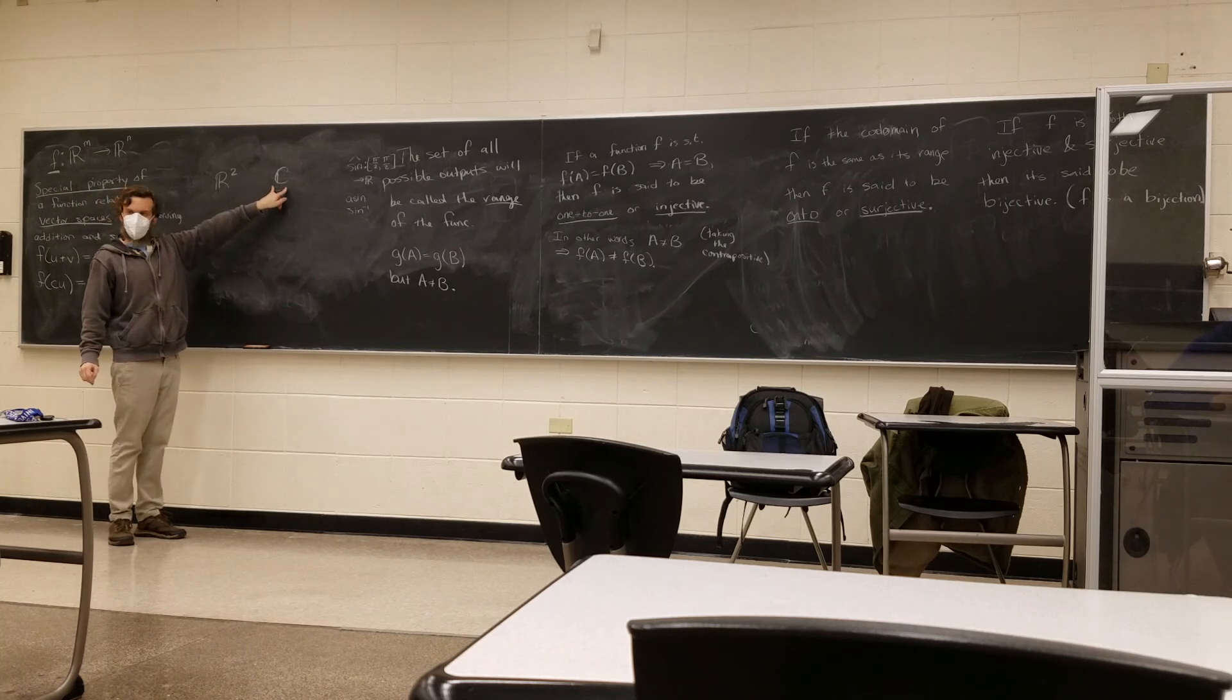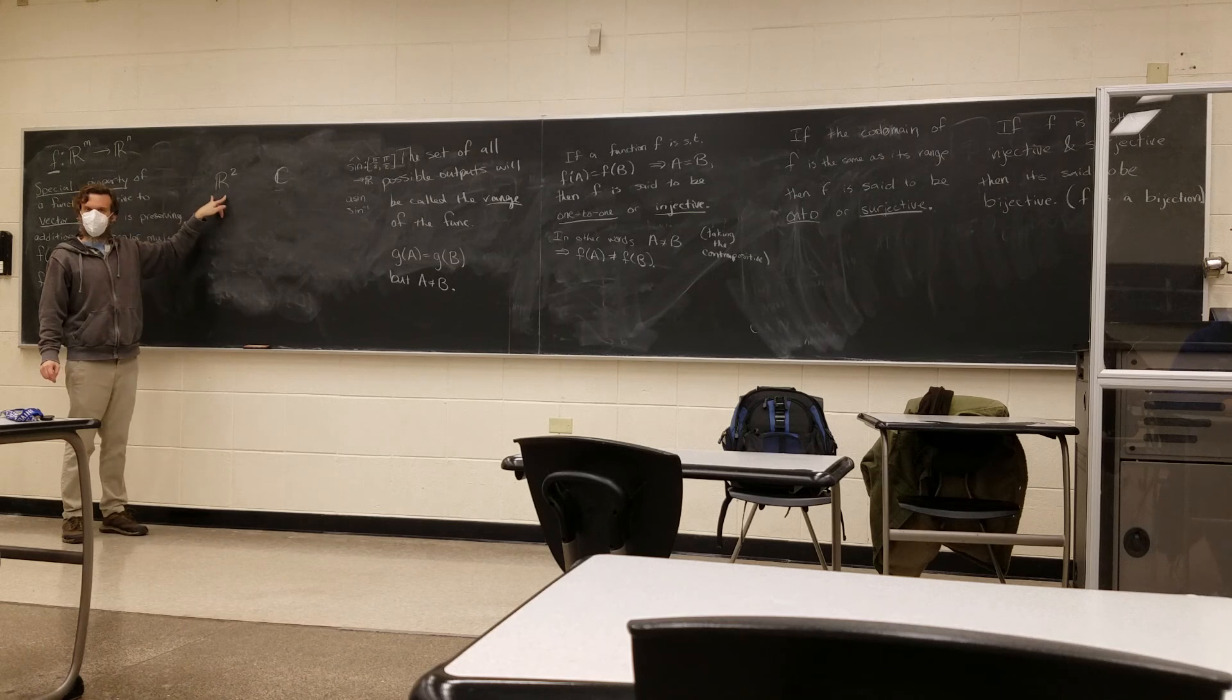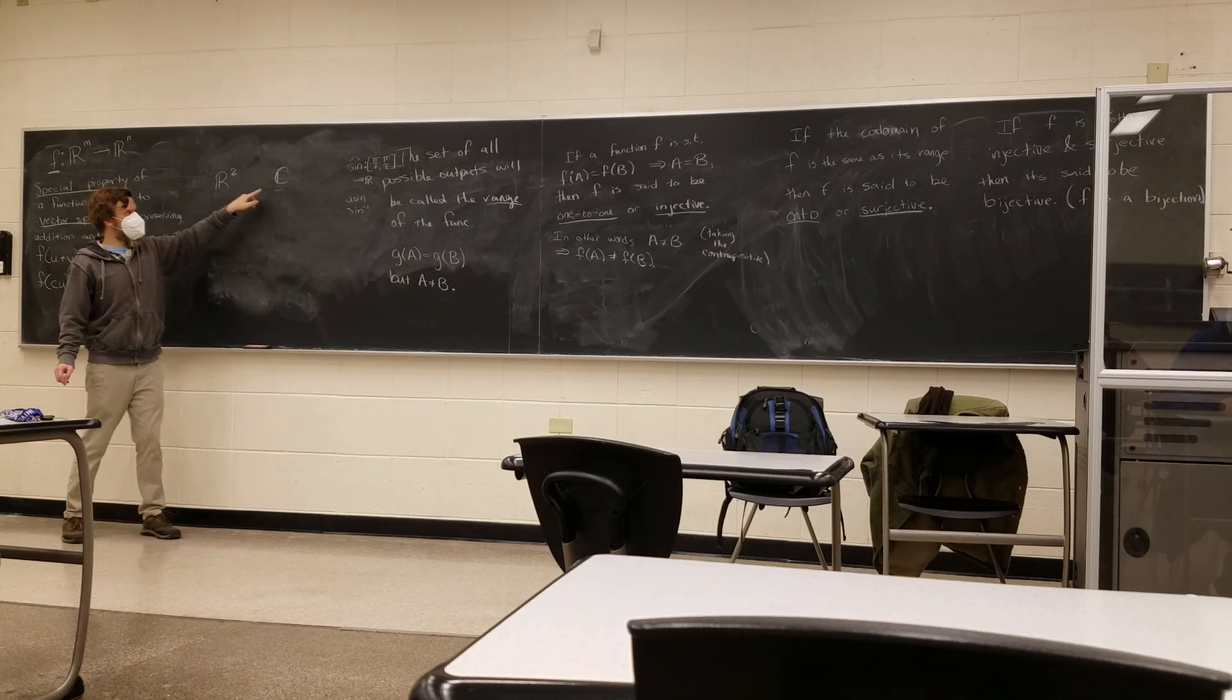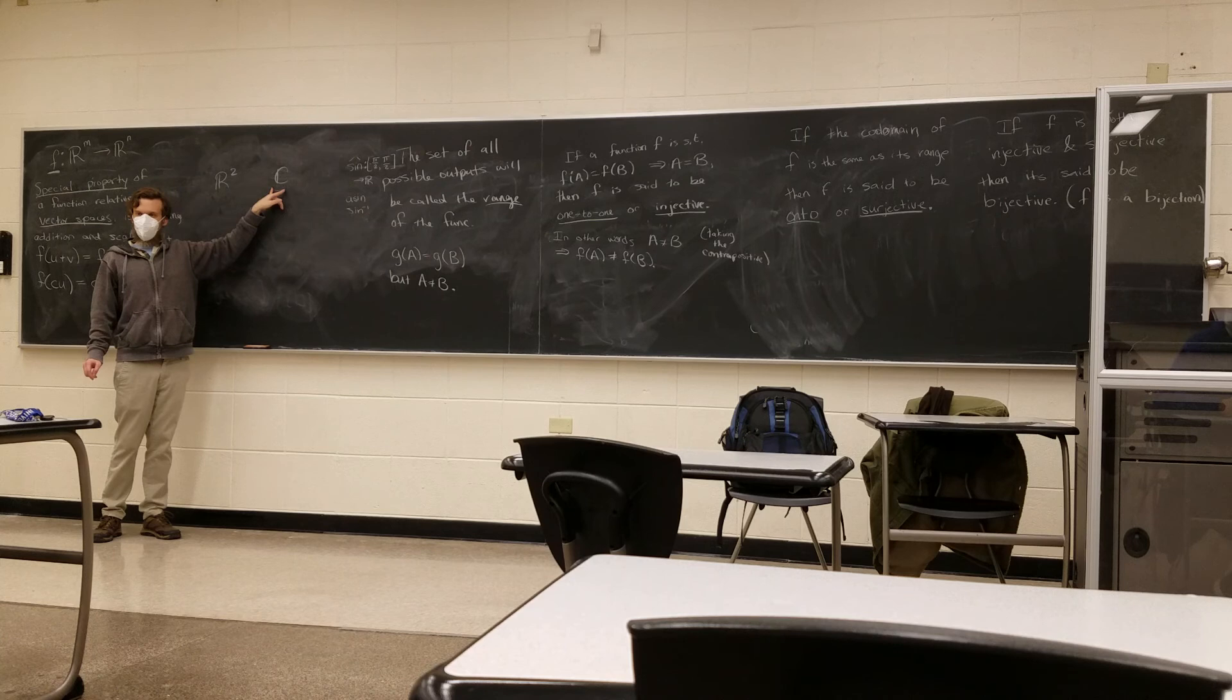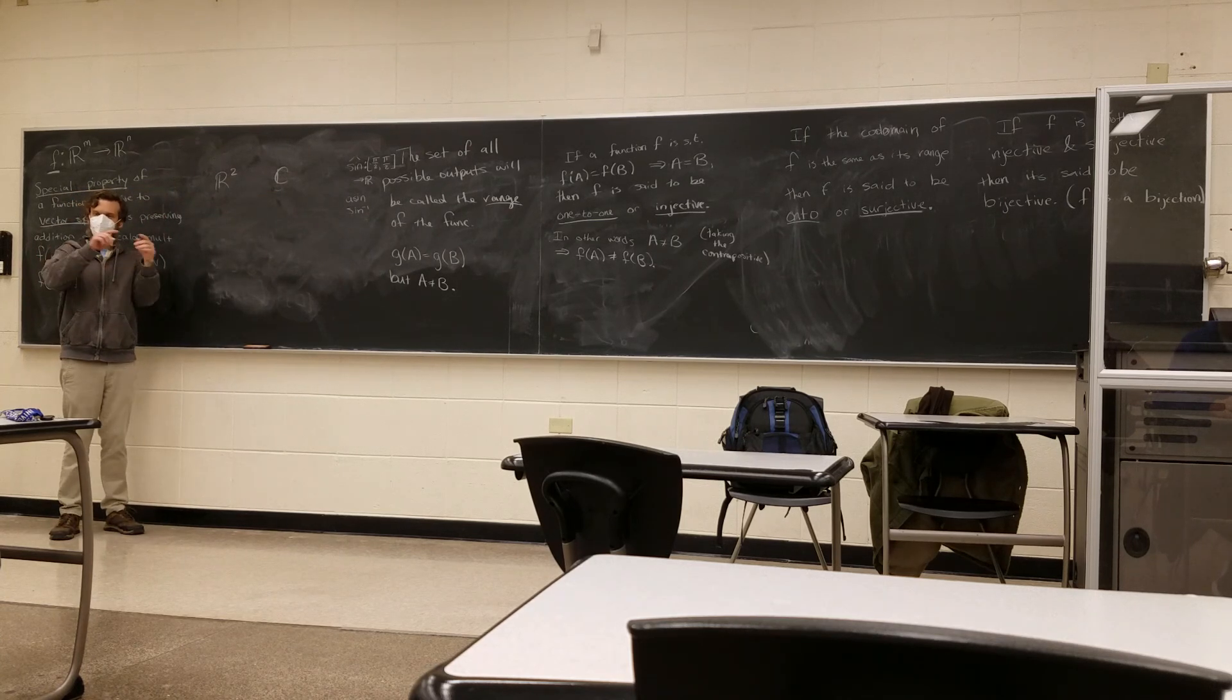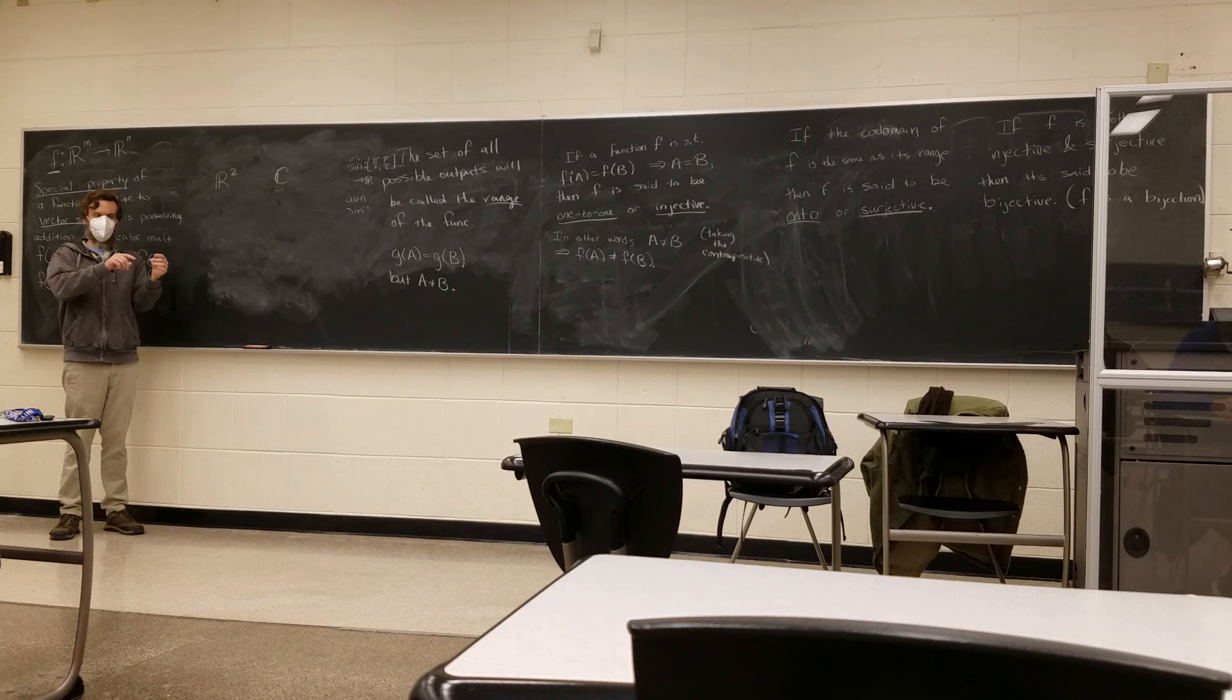When you add two complex numbers, you just add the real parts and you add the imaginary part. That's just like vector addition. When you multiply a complex number by a real number, you multiply the real part by the real number, and you multiply the complex part by the real number. That's just like scalar multiplication.